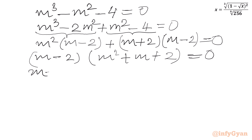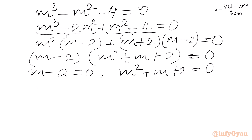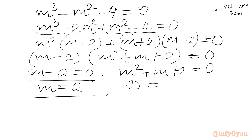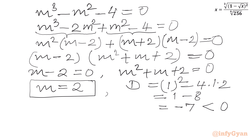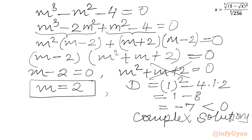From the factorization, either m minus 2 equal to 0, giving m equal to 2, or m² plus m plus 2 equal to 0. For the quadratic, the discriminant is b² minus 4ac equals 1² minus 4(1)(2) equals 1 minus 8, which is negative. So the quadratic gives only complex solutions. Since we are looking for real values of x, we reject this quadratic and accept m equal to 2.